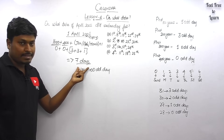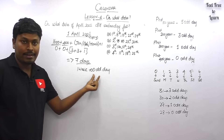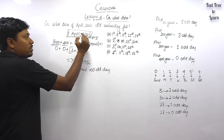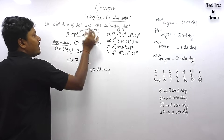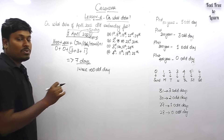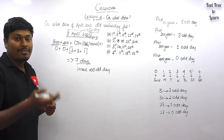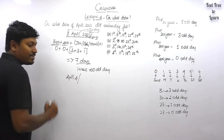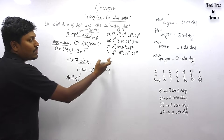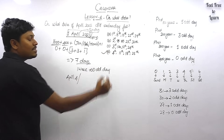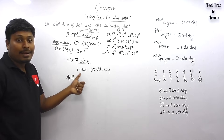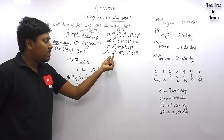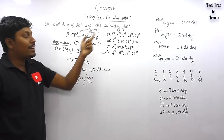Seven days equals one week plus zero odd days, which means 1st April 2001 falls on the zeroth odd day — which is Sunday. So 1st April 2001 is Sunday. 2nd April is Monday, 3rd is Tuesday, 4th April is Wednesday — the first Wednesday. All consecutive multiples of seven will also be Wednesday. So the answer is 4, 11, 18, 25 — these are all the dates where Wednesday falls in April 2001.